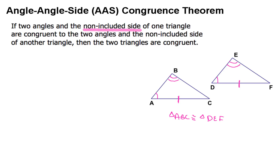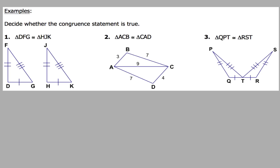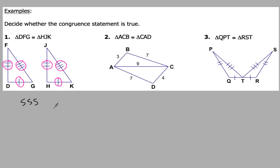Now let's look at our diagrams. In example 1, we've got triangle DFG congruent to triangle HJK. Looking at the diagram, we've got one side congruent — side DF is congruent to side HJ — and a second side, and FG is congruent to JK. Since all three sides of one triangle are congruent to three sides of another triangle, we can say that congruent statement is true and use the side-side-side congruence postulate to prove those two triangles are congruent.